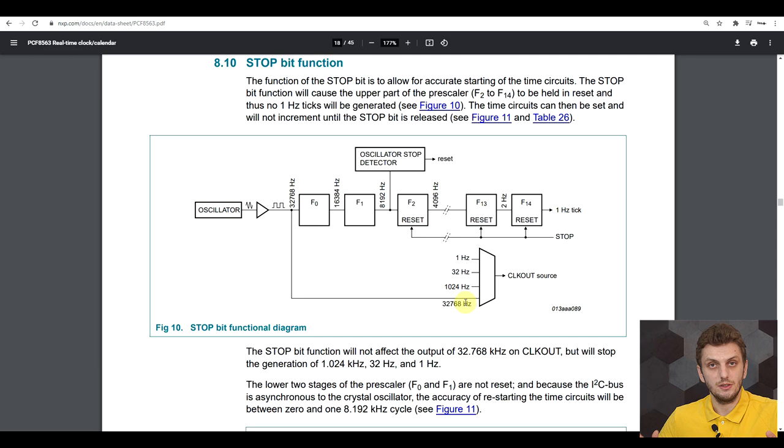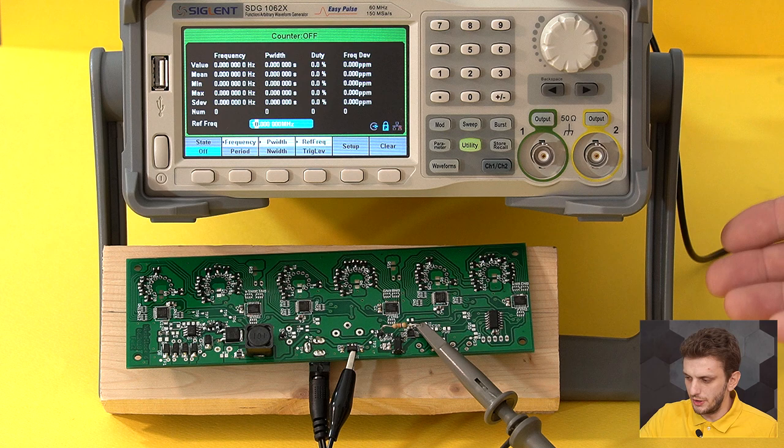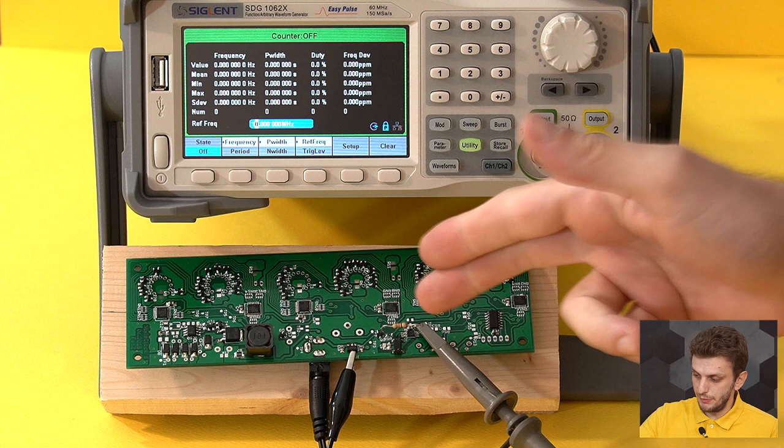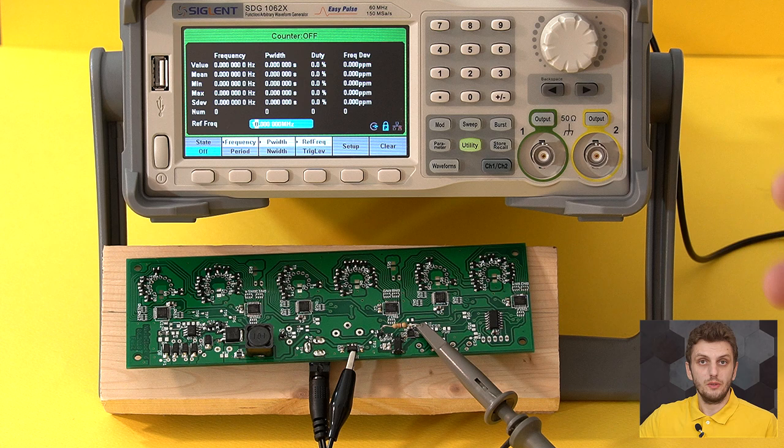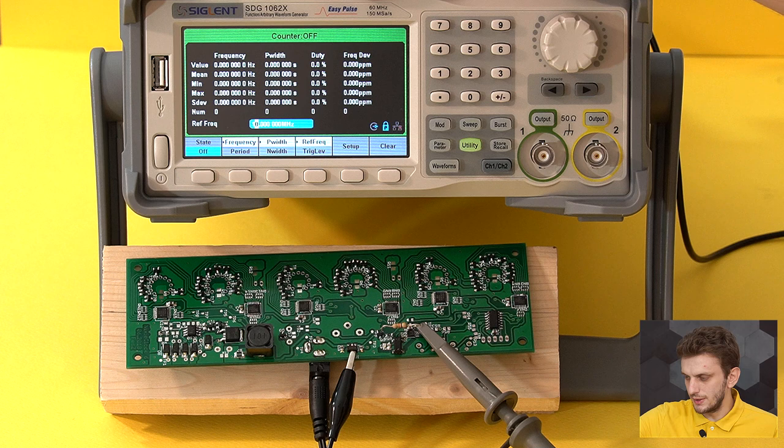So what I have here is a board I've been working on—it's an IXI clock, and the clock part of it is based around the PCF8563 real-time clock. What I want to do is check just how well the oscillator is working by using the clock out pin.